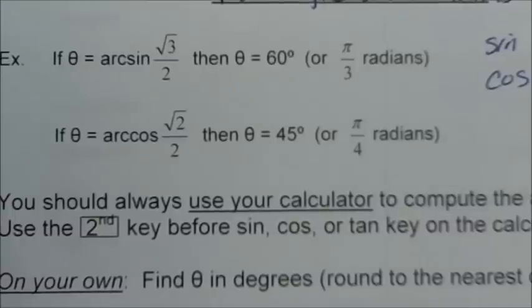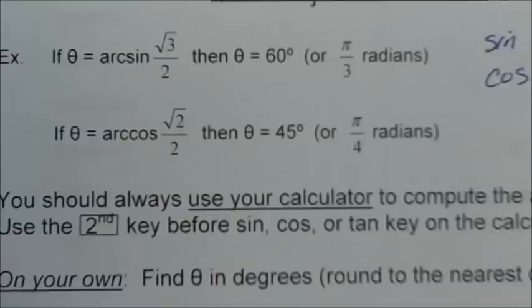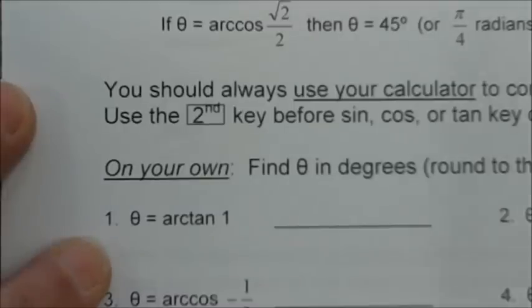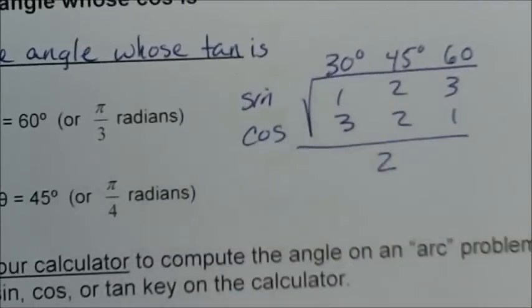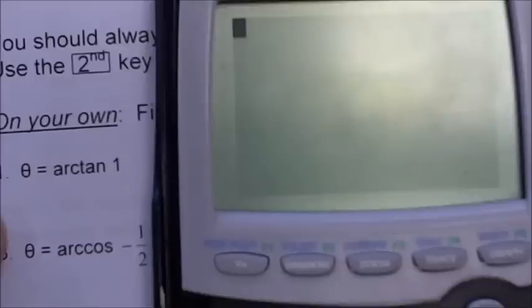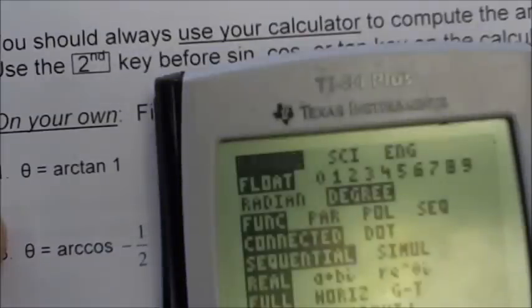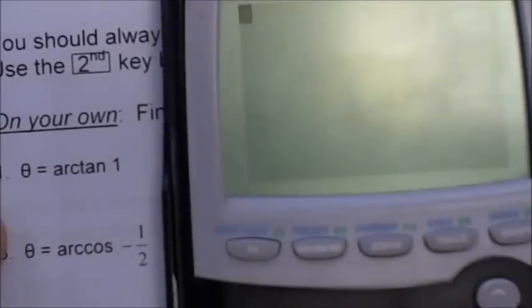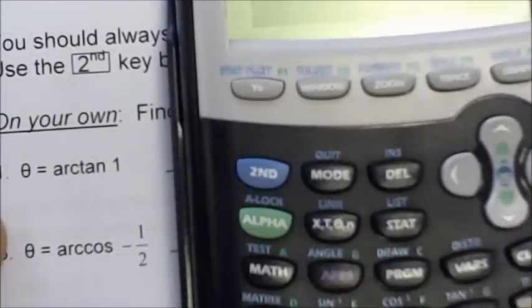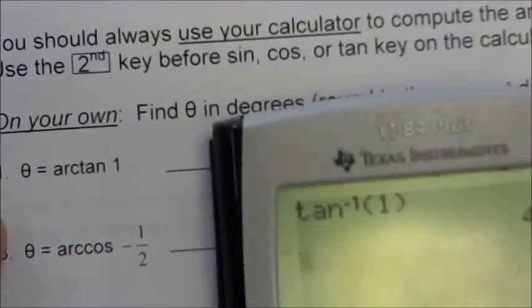Let's try these. Find theta in degrees, rounded to the nearest degree if necessary. Theta equals arc tangent of 1, so we're looking for the angle whose tangent is 1. The 45 degree angle has a tangent of 1. But if we're using the calculator, make sure you're in degree mode. Second, tan, 1 — 45 degrees.